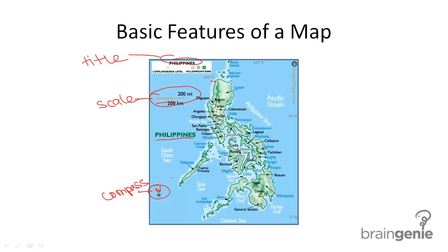Last is our legend. This map doesn't have symbols, but instead it has colors, and the legend shows what those colors mean. So those are the four basic features you need to be able to read a map.